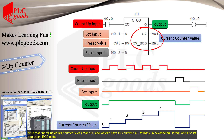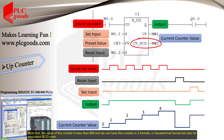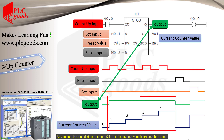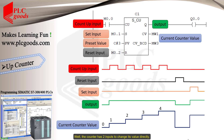We can have this number in two formats: in hexadecimal format and also its equivalent BCD code. The signal state at output Q is one if the counter value is greater than zero.